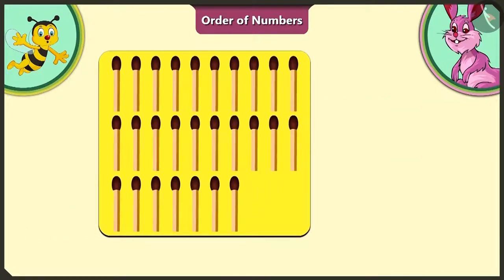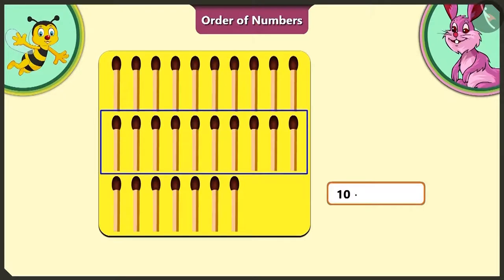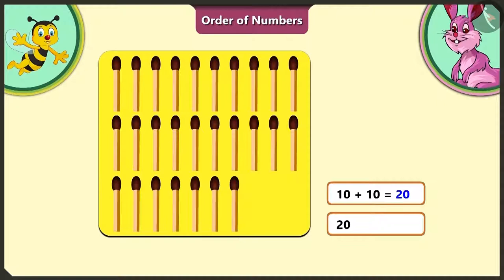Let's see the first group of matchsticks on the yellow card. There are 1, 2, 3, 4, 5, 6, 7, 8, 9, 10 matchsticks. To this first group of 10 matchsticks, we add the next group. There will be a total of 20 matchsticks and adding the remaining 7 matchsticks to this, we get a total of 27 matchsticks.